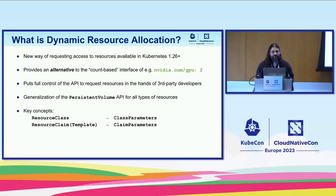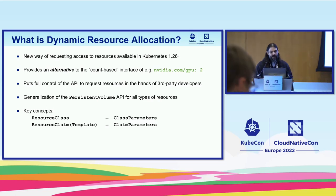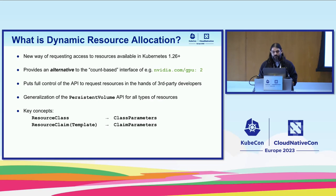What exactly is Dynamic Resource Allocation? It's a new way of requesting access to resources available in Kubernetes 1.26 and beyond. It provides an alternative to the count-based interface — for example, asking for nvidia.com/gpu:2 — and puts full control of the API to request resources in the hands of third-party developers. If you have simple devices, you can continue to use the existing device plugin interface, but for more complex devices, this new mechanism gives you a much more powerful interface.